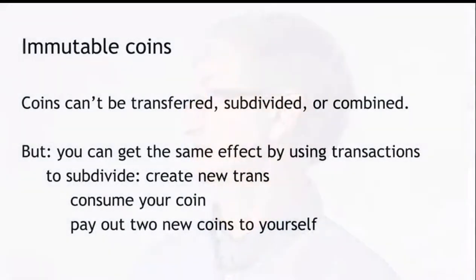One thing to note is that coins are immutable — they're never changed, subdivided, or combined. They are created once in one transaction and consumed in another. But you can get the same effect as subdividing or combining coins by using transactions. For example, to subdivide a coin, create a transaction that consumes that one coin and produces two new coins of the same total value, which you can give back to yourself. Similarly, you can combine coins or pay on a coin by creating a chain of transactions. Although coins are immutable, the system has all the flexibility of one that didn't have immutable coins.